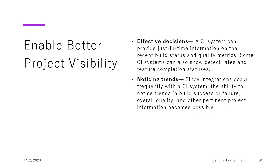Then there is enabling better project visibility. We can now make effective decisions because this CI system can give just-in-time information about the build status and quality metrics — since we have set up thresholds for testing. It gives very good visibility on how the project health is, how many builds passed versus failed, the quality metrics, and so on. It also gives us a trend in terms of success and failure, so we can judge the overall quality of the project.